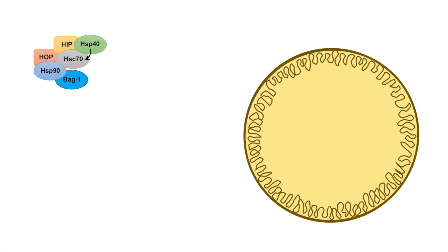HSC70 is the chaperone that recognizes the KFERQ consensus sequence. If there are unfolded proteins involved in this interaction, HSP90 prevents those unfolded proteins from aggregating together. BAG1 has been shown to be a regulator of HSC70 activity — it can either activate or inactivate HSC70 depending on the circumstance. This entire protein complex is known as the chaperone complex.